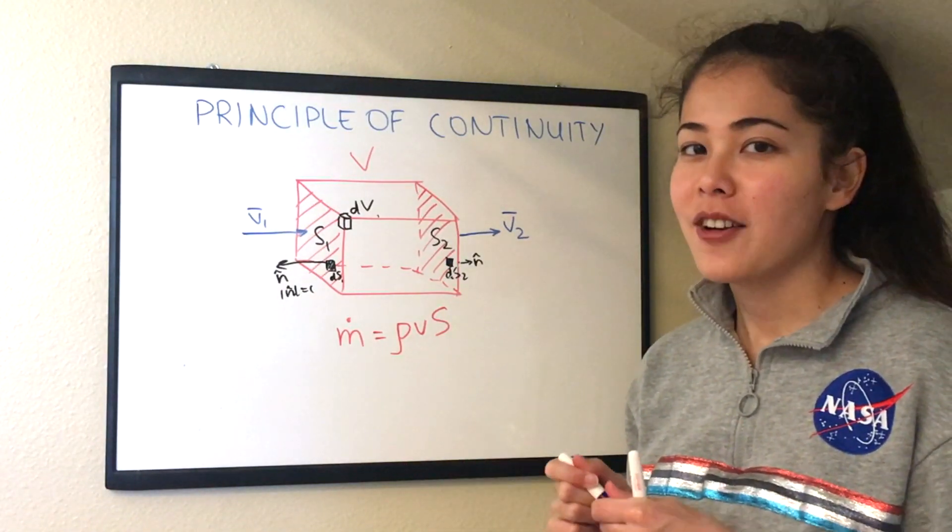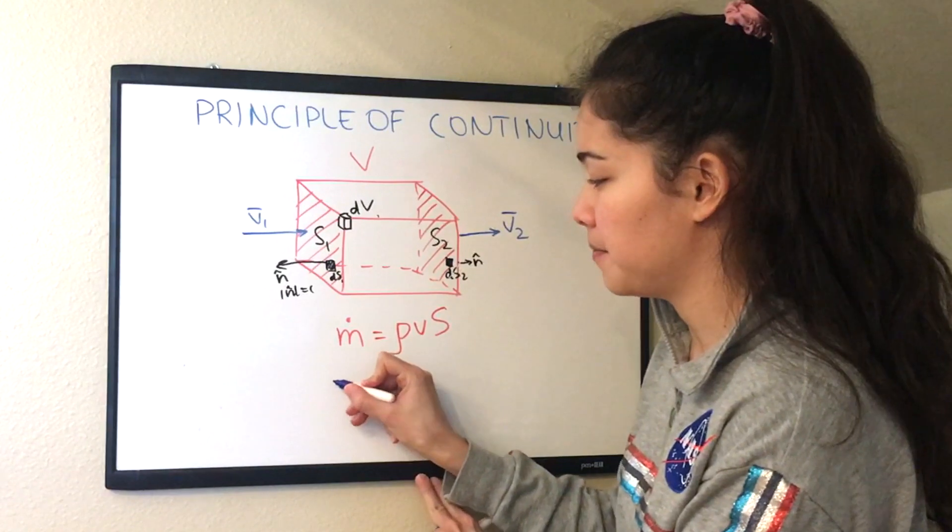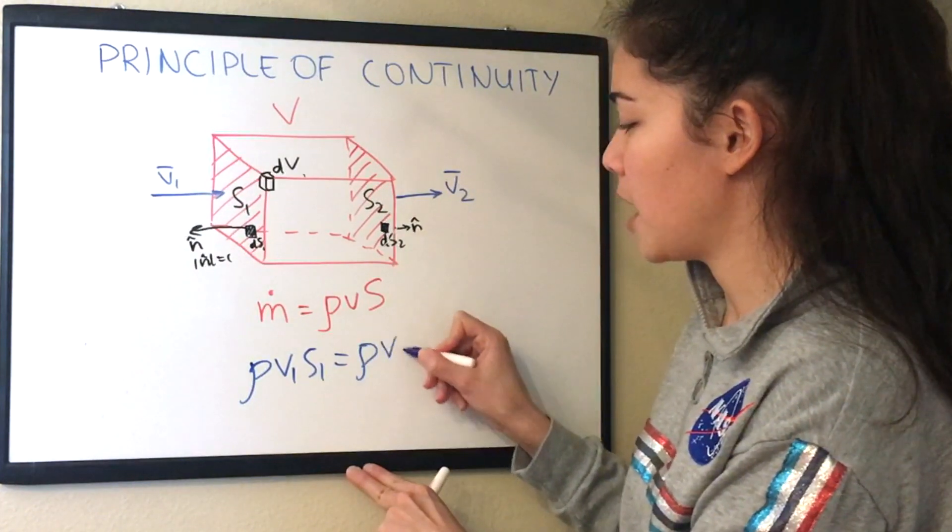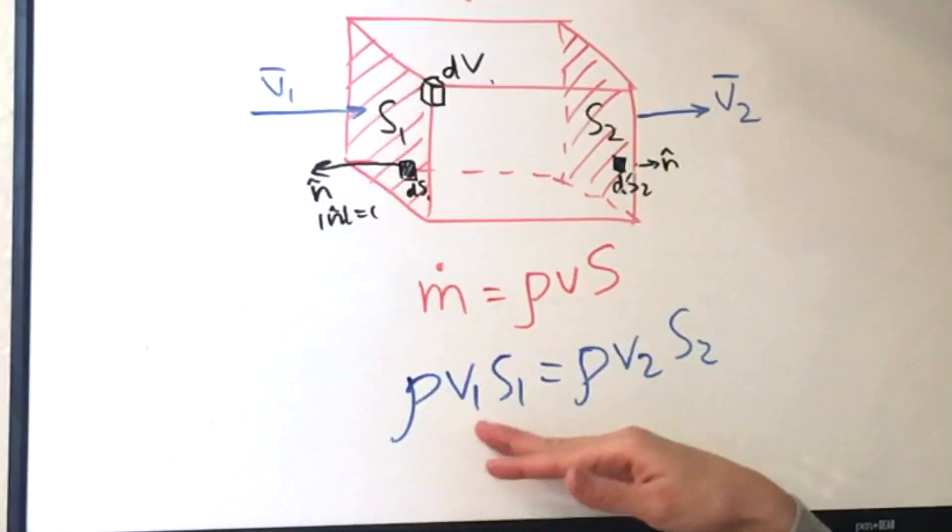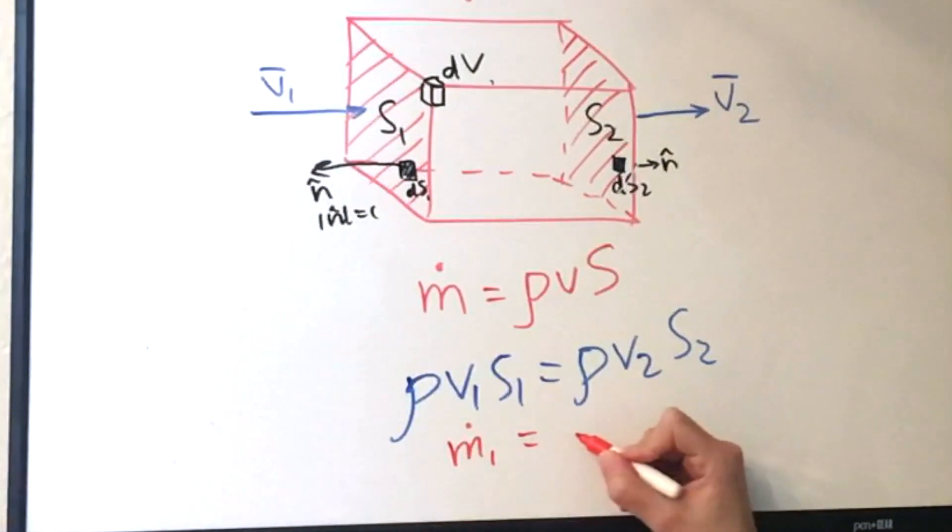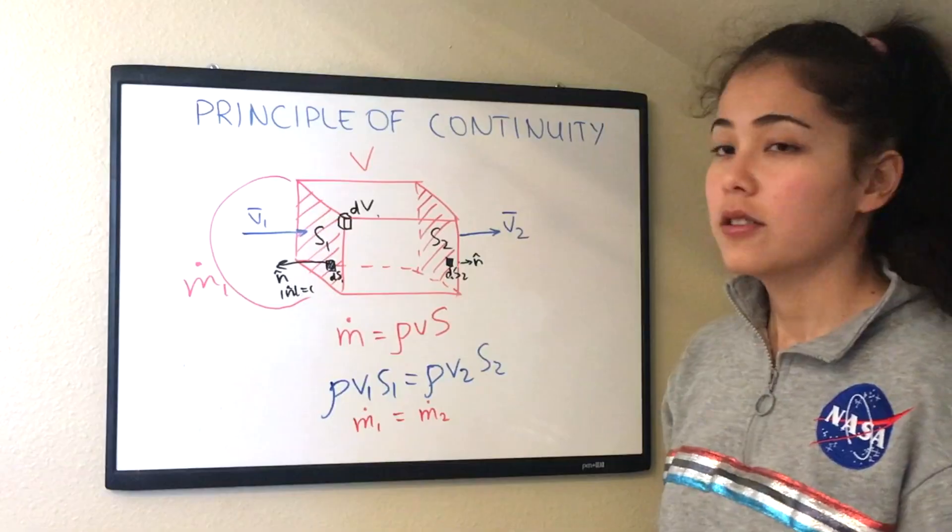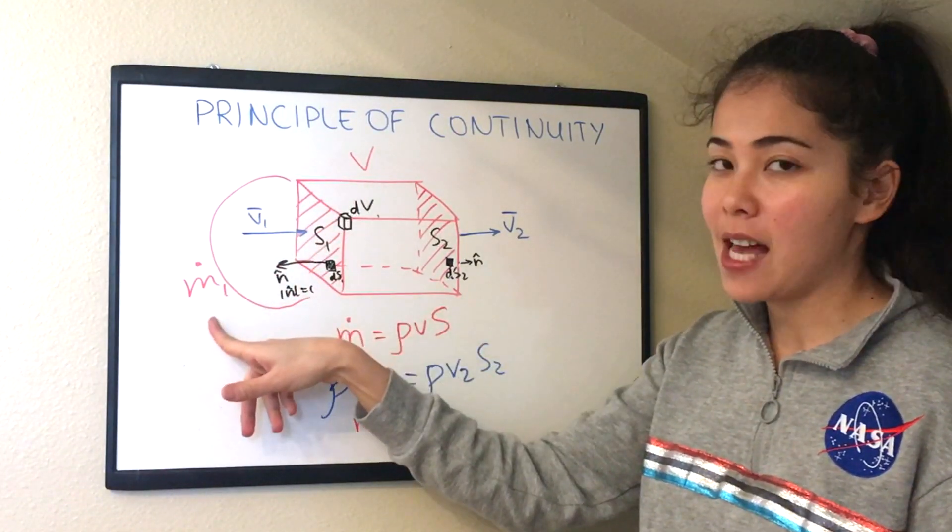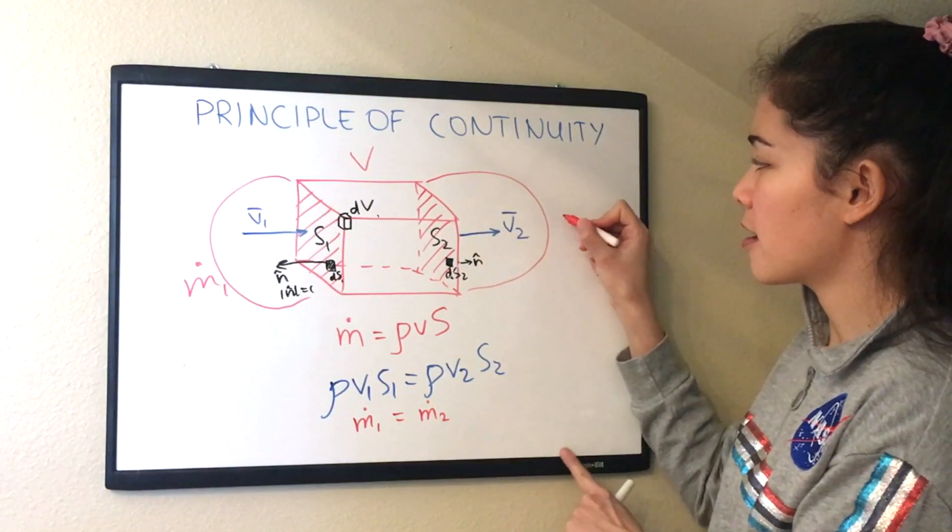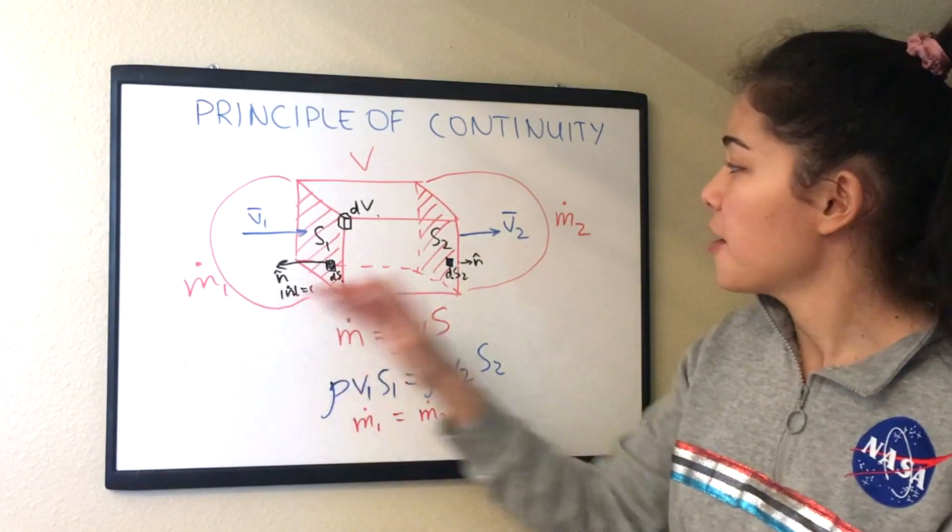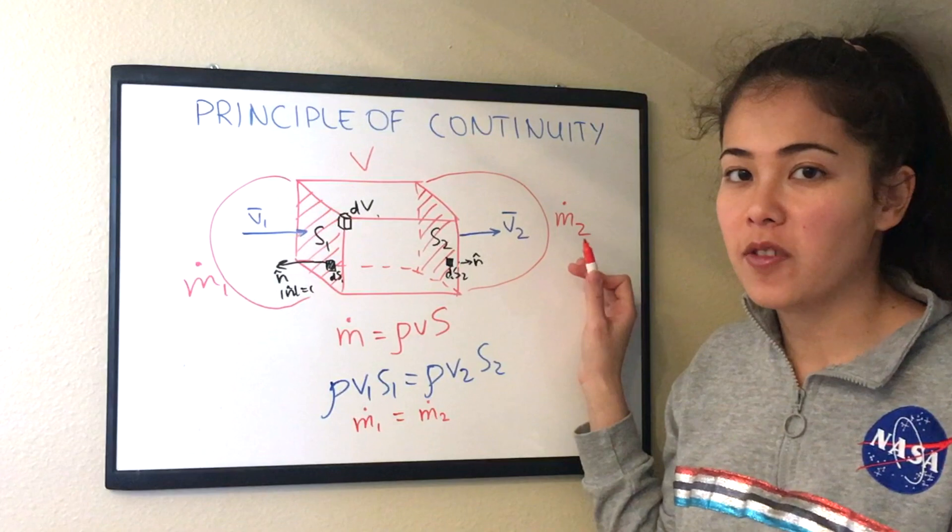So to conclude this video remember that we had previously density multiplied by v1 by s1 equal to density multiplied by v2 s2. So now we can write this expression down as m1 dot equal to m2 dot. So the flow of air through the left-hand side will be m dot and the flow of air through the right-hand side or the exiting air will be m2 dot and they are equal. And this is the principle of continuity.